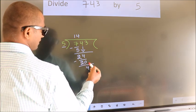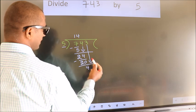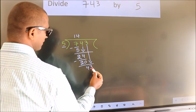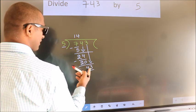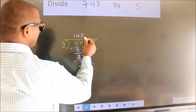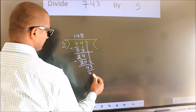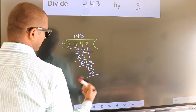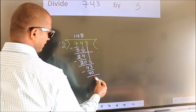After this, bring down the beside number. So, 3 down. So, 43. A number close to 43 in 5 table is 5, 8, 40. Now, we subtract. We get 3.